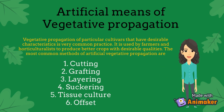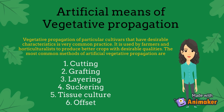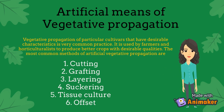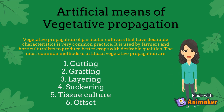Grafting involves attaching a scion, or a desired cutting, to the stem of another plant called the stock, that remains rooted in the ground. Eventually both tissue systems become grafted or integrated, and a plant with the characteristics of the grafted plant develops. Examples include mango and guava.